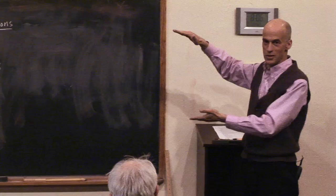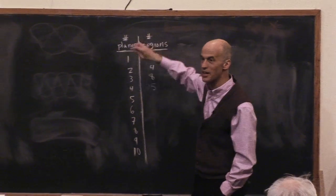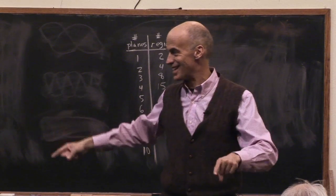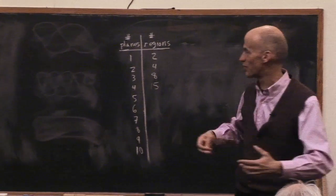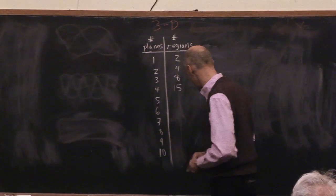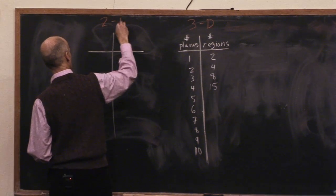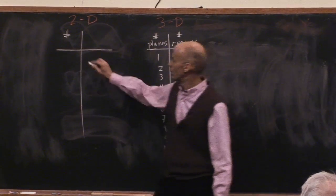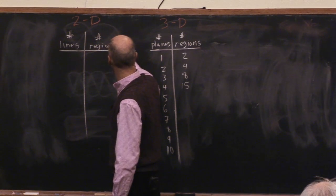How can I simplify this problem greatly so that it suddenly becomes doable? I'll just jump to it. You have to picture this — this is usually the beginning of the second day. So they've spent 45 minutes on it, that's all they've done, they're pulling their hair out. And then finally there's a breakthrough, and it's an amazing experience when they see it. What is it? Reduce the number of dimensions.